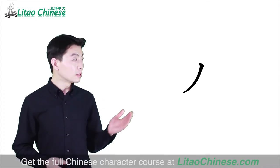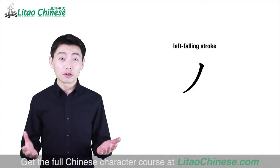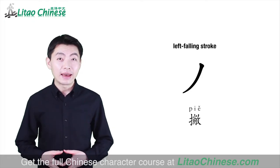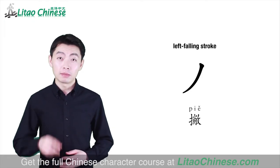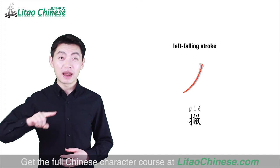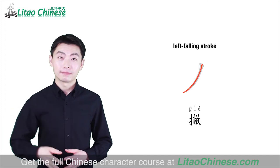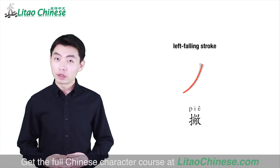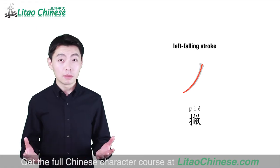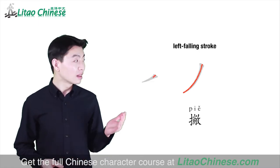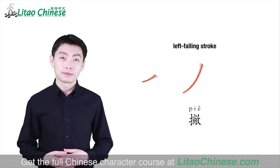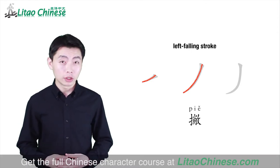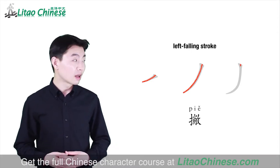The third basic stroke is the left-falling stroke. We call it 撇, which is written from top to bottom left. In some characters, the left-falling stroke 撇 is written more horizontally, like this. In some other characters, it's written more vertically, like this.